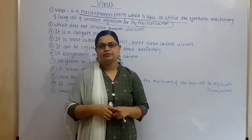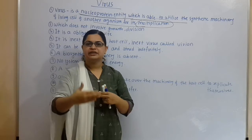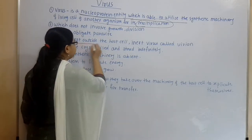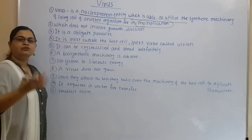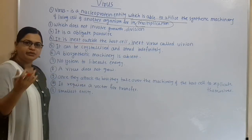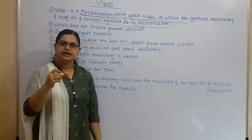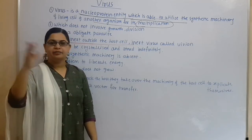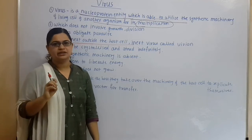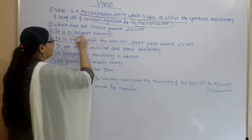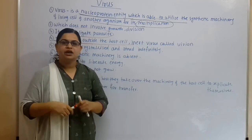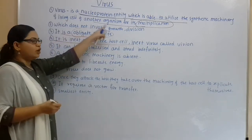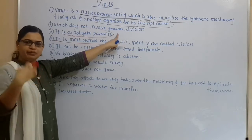Viruses are obligate parasites — they must take their food from living cells. Otherwise they are inert outside the host cell, behaving like non-living matter. When inside a human body it will be activated. As obligate parasites they always require a host cell for multiplication and food needs. They can be crystallized and stored indefinitely. The biosynthetic machinery is absent — they have no system to liberate energy and do not grow on their own.